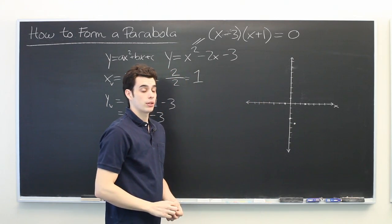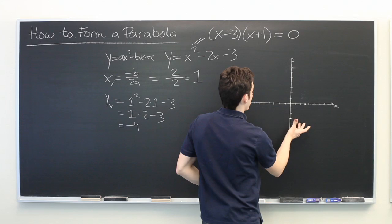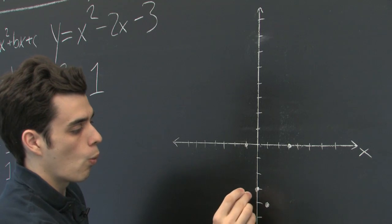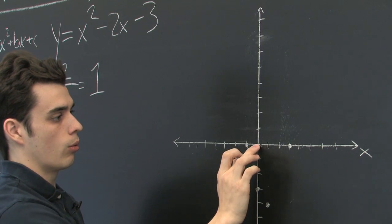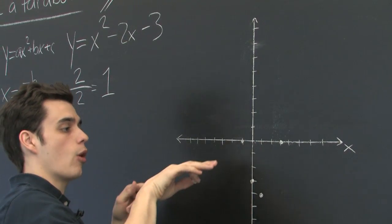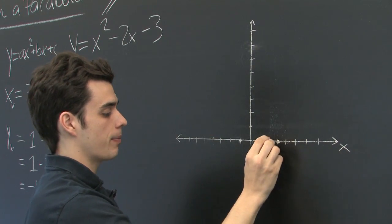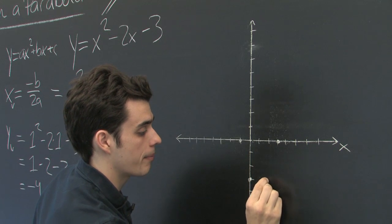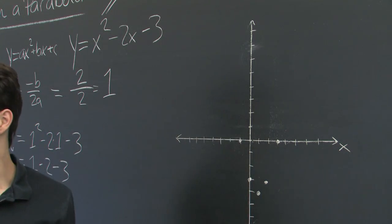Now because a parabola is symmetrical about the vertex, we know that since this is one unit to the left of the vertex, if we go one unit to the right of the vertex, our y value will be the same. So that's 2 minus 3.